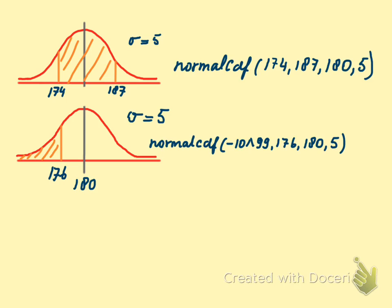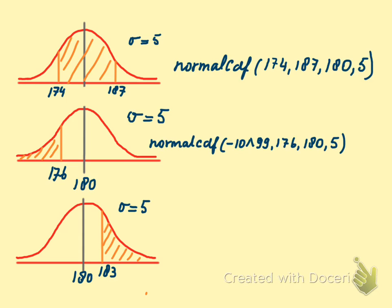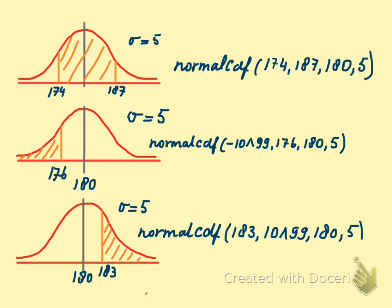Third example: 183. What's the chance you belong to the people who are taller than 183? NormalCDF — the left border is 183, then 10 to the 99th, mean 180, and 5 for the standard deviation. Enter. That's it.